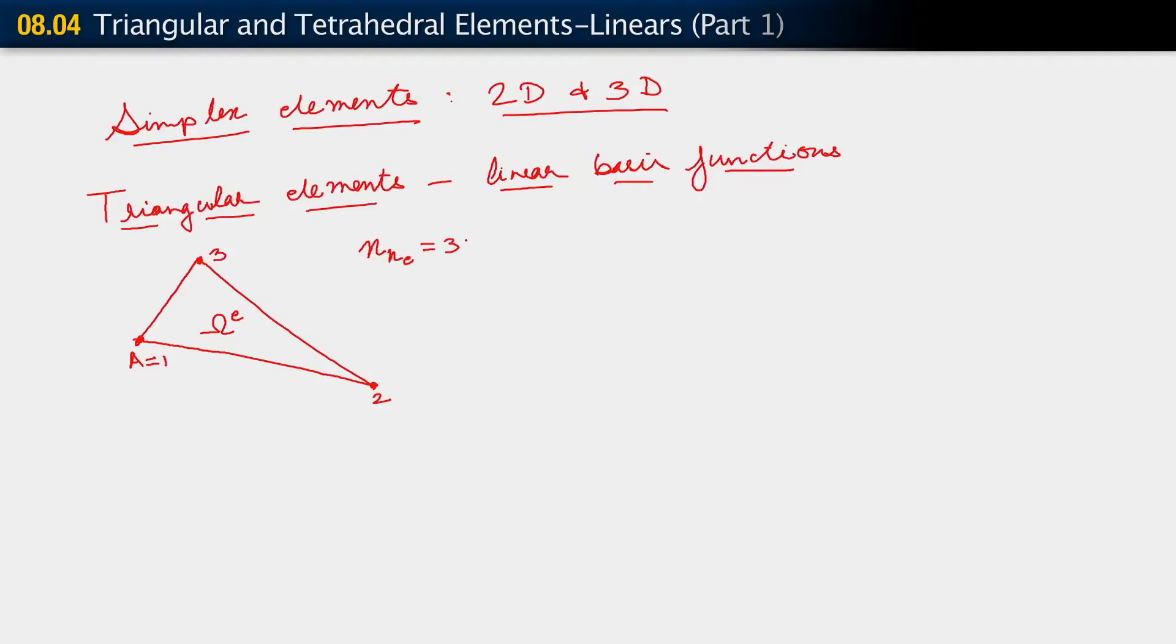And we take the same approach that we took in the case of quadrilateral elements, where this triangle is thought of as being constructed, or is being obtained as a mapping from a parent domain. Since it's a triangle, we obtain it from a triangle also in this parent domain. It's also two-dimensional, so we have our coordinates there as before. We have C1 and C2.